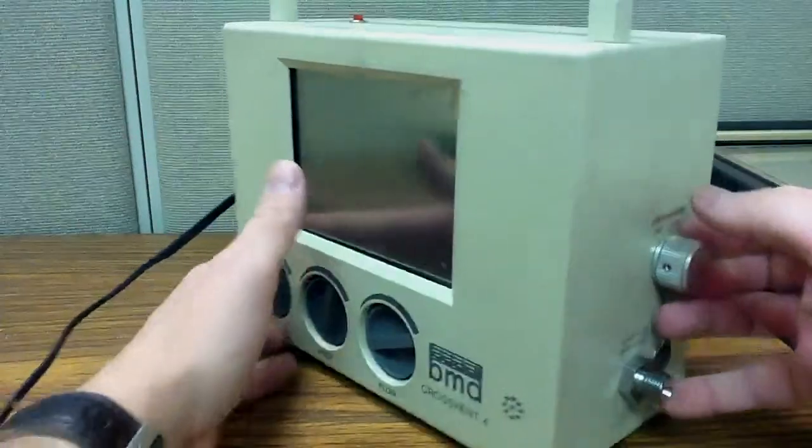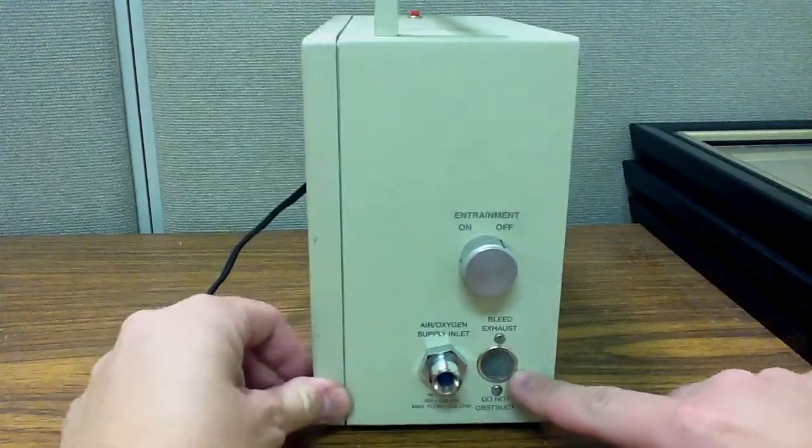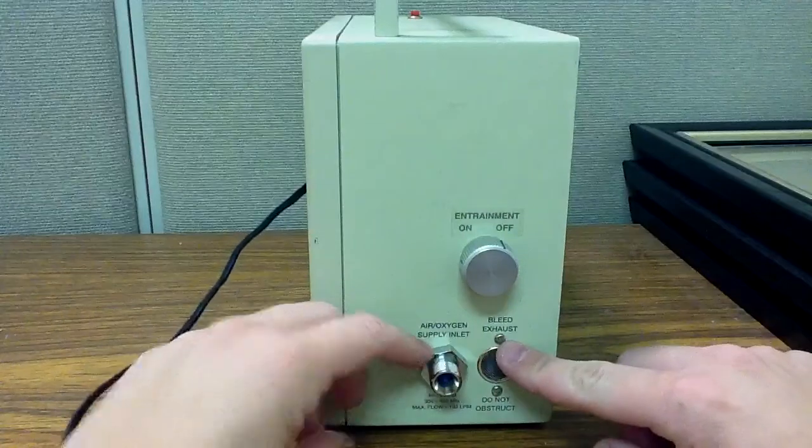Okay, let's take a look at the right side of the ventilator. This is my bleed exhaust. If I have a little too much gas, it'll bleed off from here.